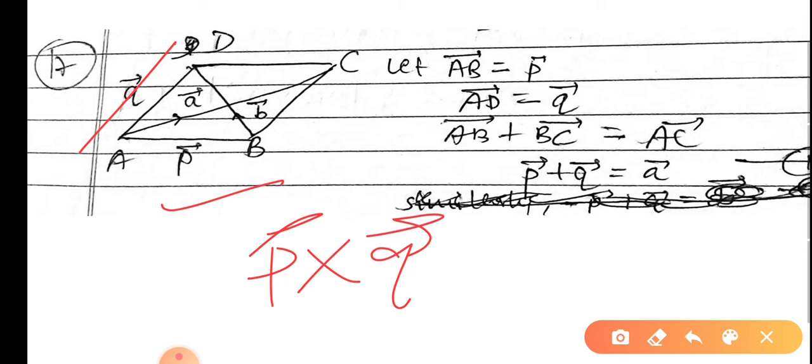BA + BC equals AC. BC and AD are opposite vectors, they're the same.